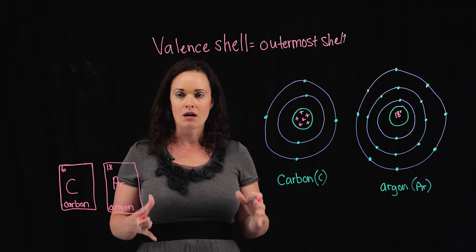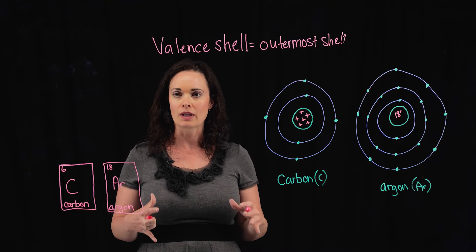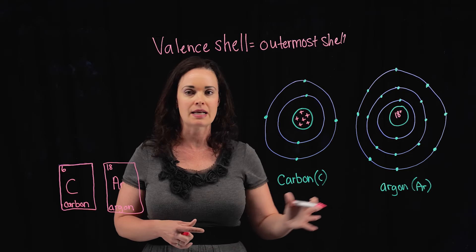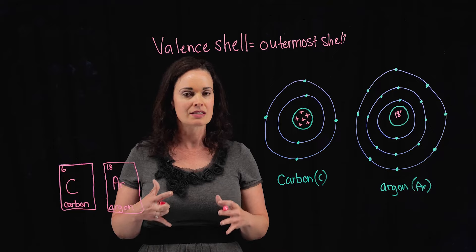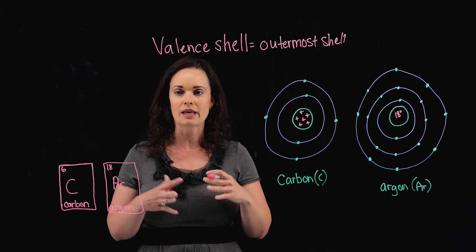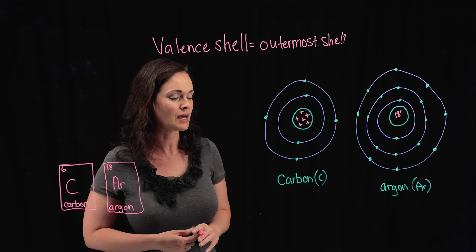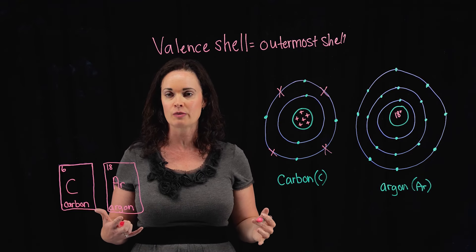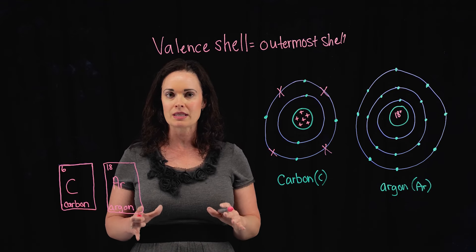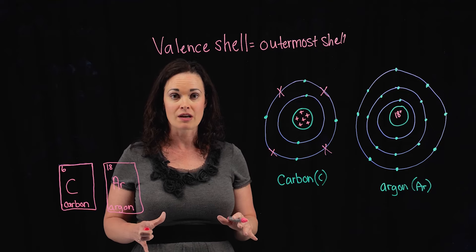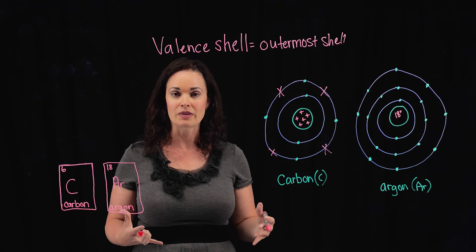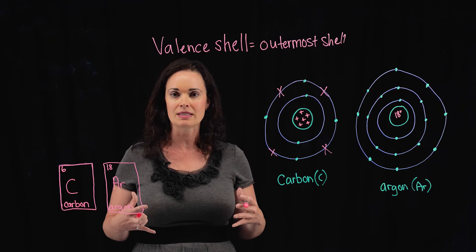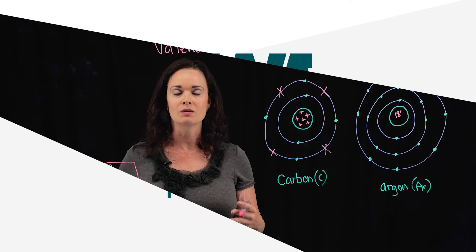All atoms want to have a full outermost shell because they are most stable with a full valence shell. Argon is a very stable atom — it doesn't react with anything because its shell is already full and it's already as stable as it can be. With carbon, we're missing four electrons needed to fill the valence shell, so atoms that don't have a full valence shell will look to react with other atoms to fill it. That's what we'll get into in the next video — how atoms interact to fill their valence shells.